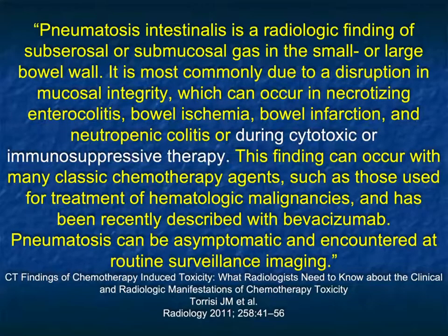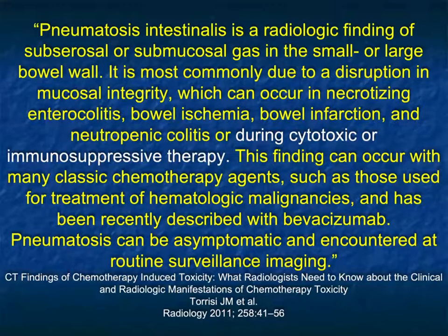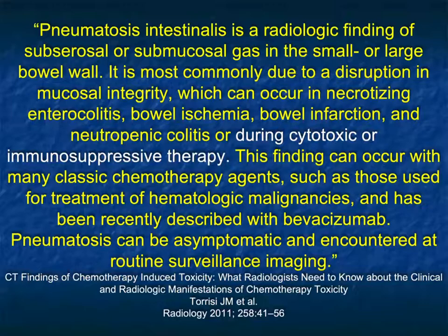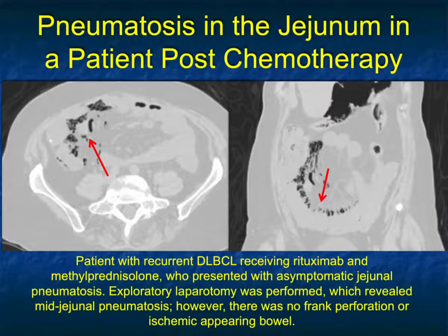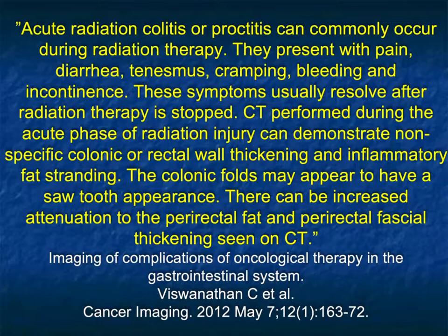Pneumatosis intestinalis is a radiologic finding that may be seen during chemotherapy. We always worry about pneumatosis representing infarcted bowel, but it can occur with certain chemotherapy agents and patients can actually be asymptomatic. If you see pneumatosis in an asymptomatic cancer patient on routine follow-up, note that while we're always concerned about ischemia, it can be a finding related to the patient's chemotherapy — as seen in this patient with pneumatosis in the jejunum following chemotherapy.